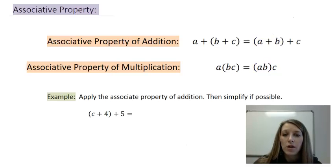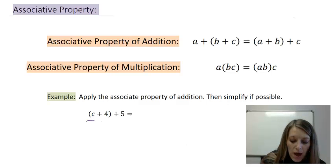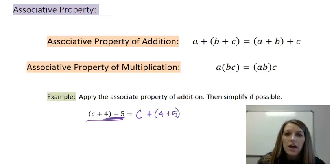An example of what your homework problem might look like. So down here it says apply the associative property of addition and then simplify if possible. So I see that I'm trying to add three numbers here. Let me rearrange it. So I'm going to add my last two numbers first. And then, of course, to simplify it,